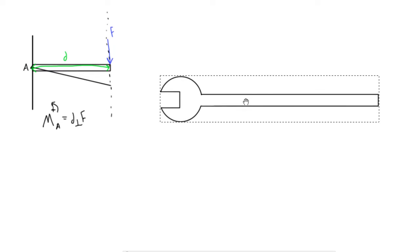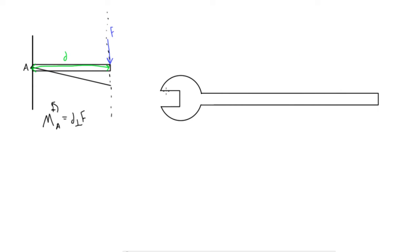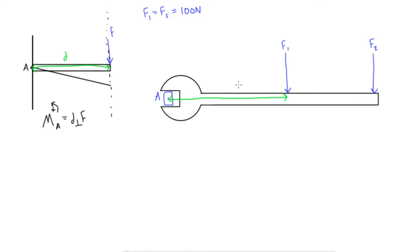Let's look at another problem — this wrench that I've drawn here, with some forces acting on it. We're trying to turn a bolt, and we'll say this bolt center is point A. We'll have a force F1 pushing down halfway along the wrench, and F2 pushing down at the very end, with F1 equals F2 equals 100 newtons. The perpendicular distance from A to the line of action of F1 is 0.15 meters, and the additional distance to F2 is another 0.15 meters, making F2's line of action 0.3 meters from point A.